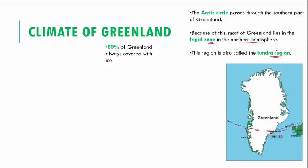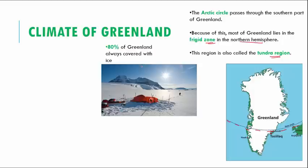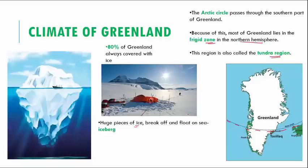Almost 80% of Greenland is always covered with ice. Whether you turn right or left, all throughout the year, nearly 80% of the land is snow and ice. Sometimes huge pieces of ice break off and start to float on the sea — these are called icebergs. As you can see here, an iceberg looks pretty small from above, but it is a really huge mass from below, which is very irregularly shaped. If boats go and dash against these icebergs, they can lead to serious damage.